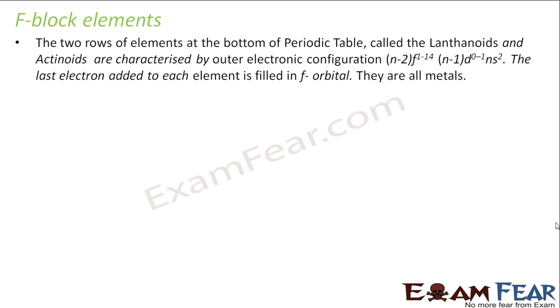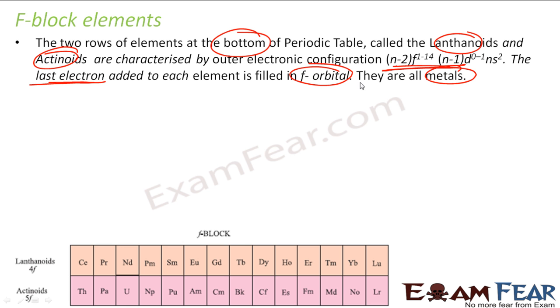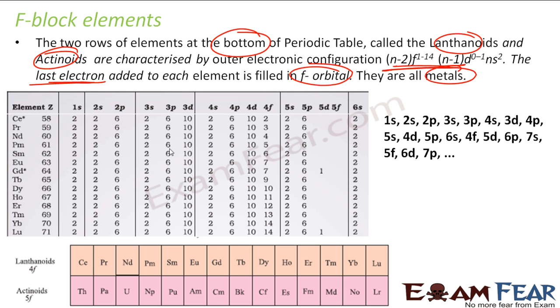We will talk about the f-block elements. I have lanthanides and actinides. They are the f-block elements. They are two rows of elements at the bottom of the periodic table. And they have this electronic configuration. In this case, the last electron is added to f-orbital. And they are all metals. These are my f-block elements. If you see, I have just written this and not in the increasing energy order. So let's do that.